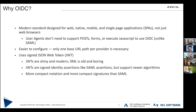JWTs also support newer algorithms than signed XML. Most SAML assertions are signed using RSA — they might still be using SHA-1 instead of SHA-256. But with JWTs, you can use elliptic curves, ED25519, SHA-3, and all the new and shiny technologies. And because JWTs are much more compact — there's a lot of wasted space in a SAML assertion — these JWTs can be passed around far more easily within a GET request in a web browser instead of needing a giant POST body.